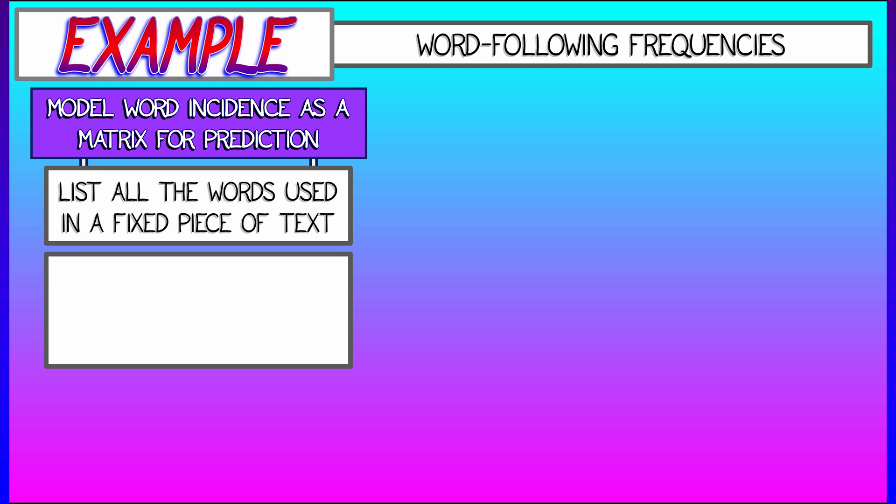Then build a matrix whose i,jth entry is the probability that word j follows after word i in the text.